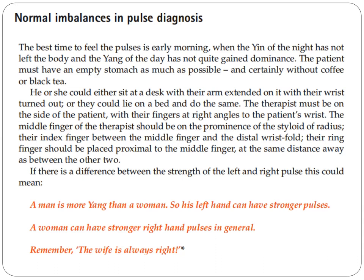The index finger is placed between the middle finger and the distal wrist fold. The ring finger is placed proximal to the middle finger, at the same distance away as between the other two fingers.